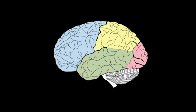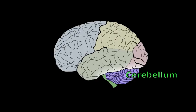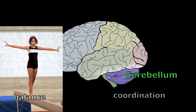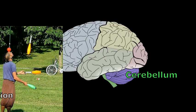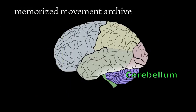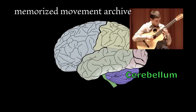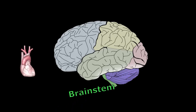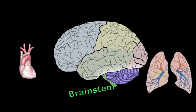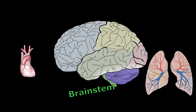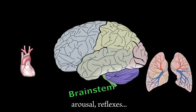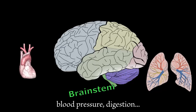There's two outer brain parts that are distinct. They seem separate, but everything is linked. The cerebellum does balance and coordination, and it has our memorized movement archive. The brainstem sets heartbeat and respiration, and other things we need to survive.